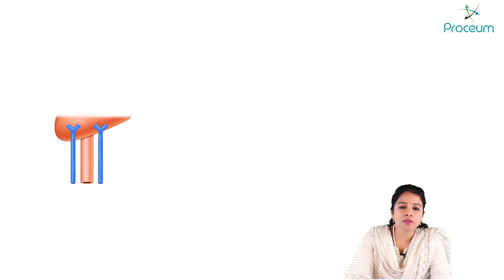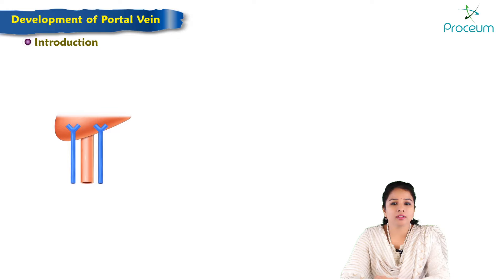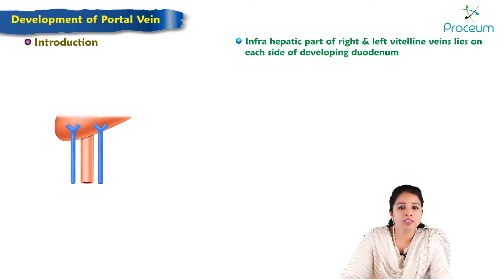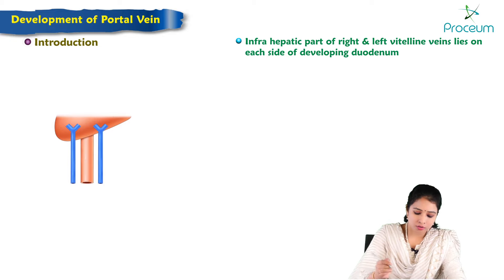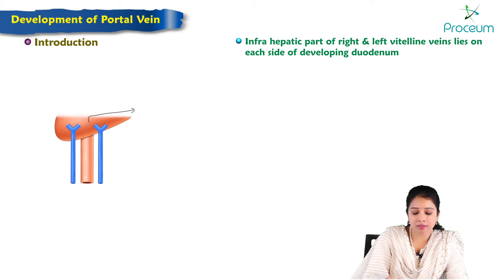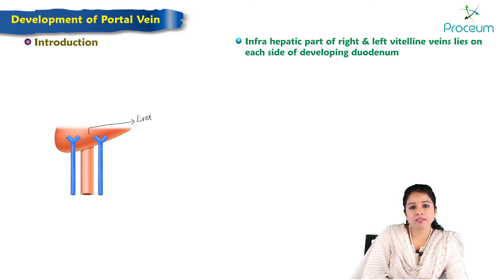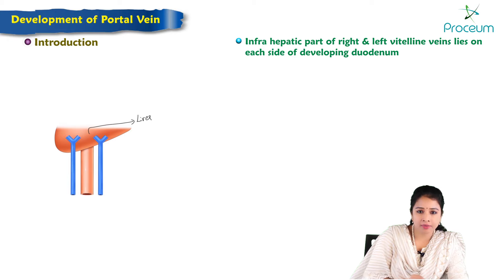Continuing with the development of the venous system, today's topic is the development of the portal vein. The portal vein especially develops from vitelline veins. Vitelline veins are the veins which drain the yolk sac. There are two vitelline veins — right and left — and they are interrupted by the developing liver, which is present within the septum transversum. Below the liver, in the infrahepatic part, the right and left vitelline veins lie on each side of the developing duodenum.